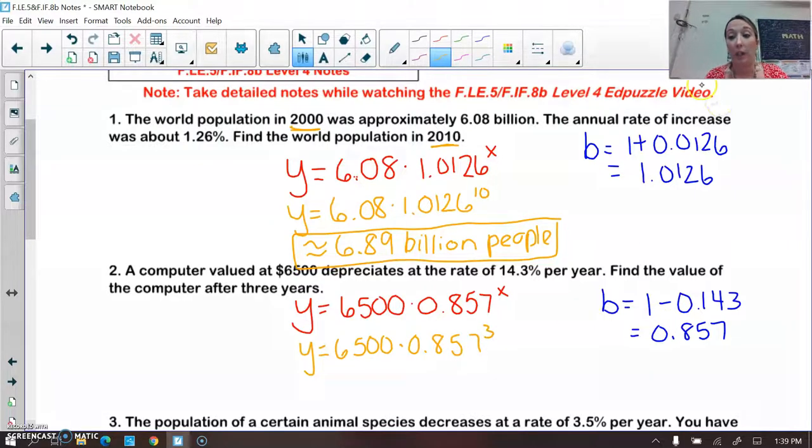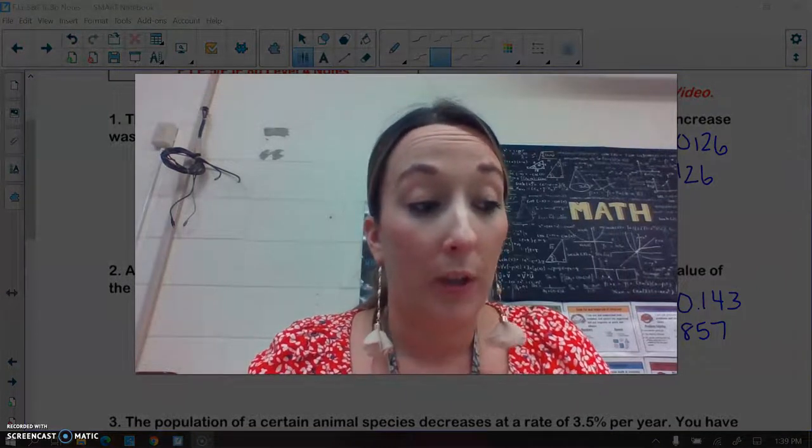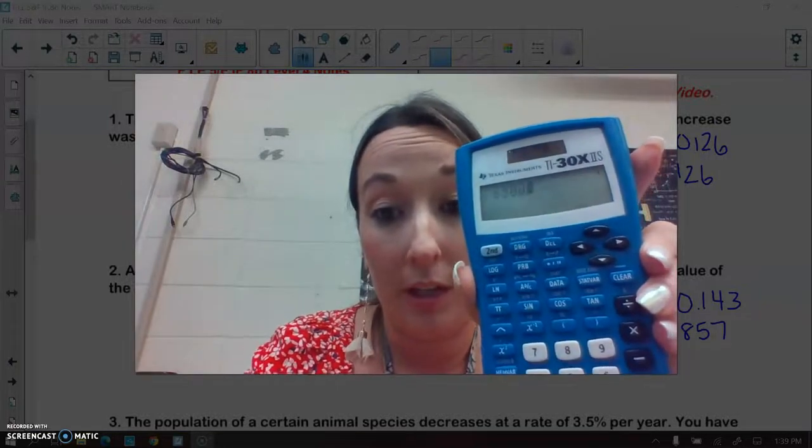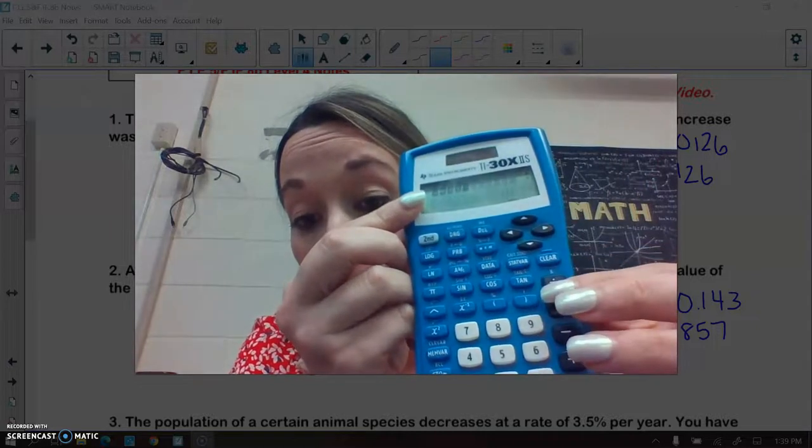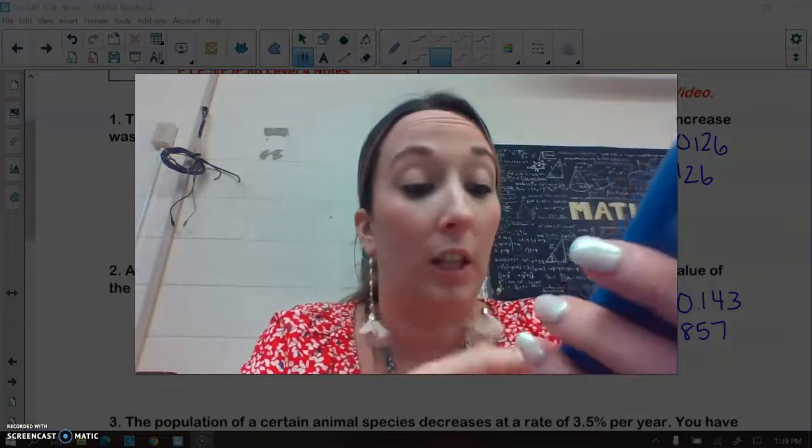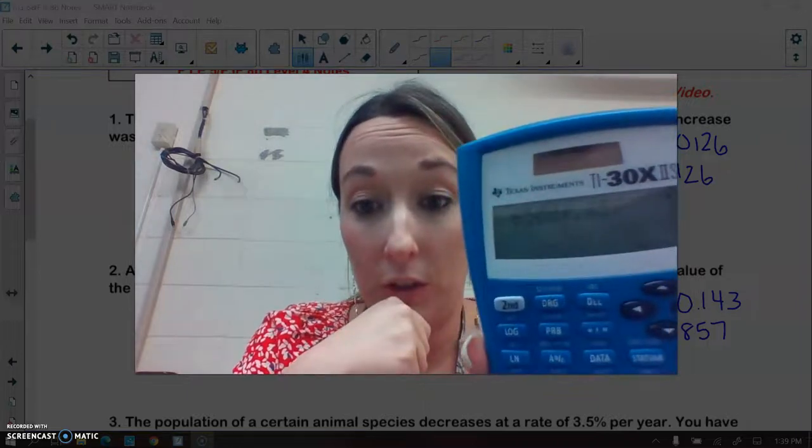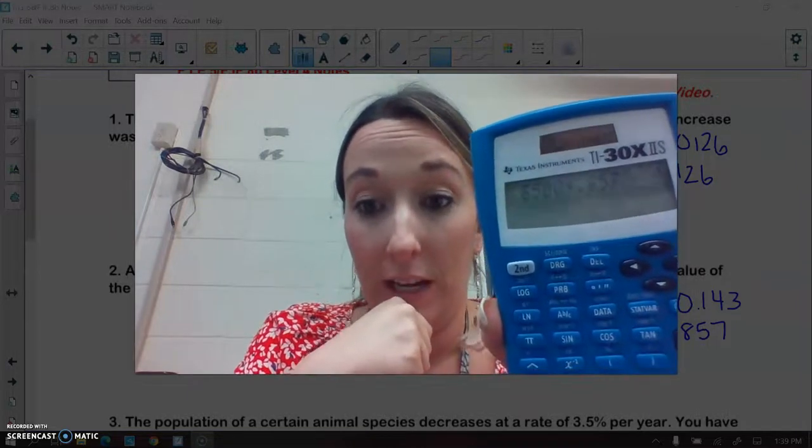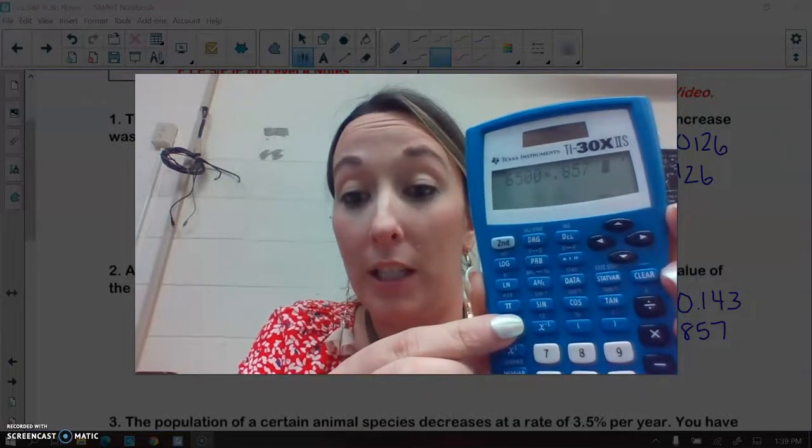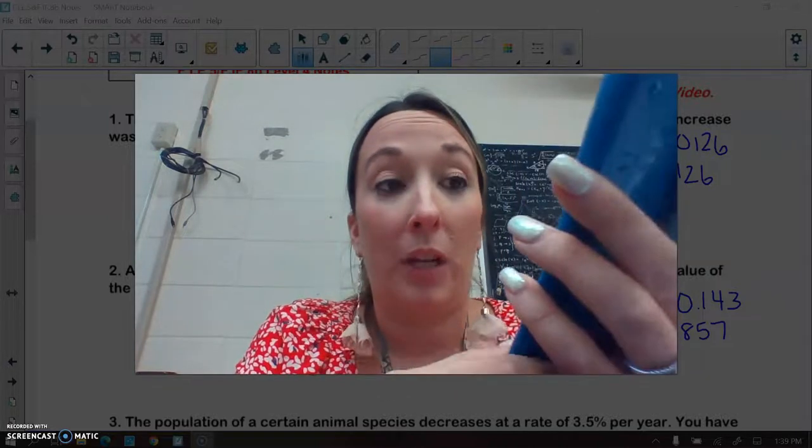I'm going to show you again how to type this into your calculator. We can type it all in at once. So we're first going to type in the 6,500. So I have that right there. And then we're going to hit the times symbol. And then I'm going to hit the 0.857. So this is what's on my screen right now. And then I'm going to raise that 0.857 to the third power. So I'm going to be typing in the caret. And then typing in 3. And then we hit enter.